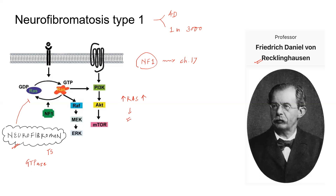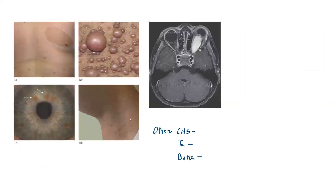Now let us see the clinical features. Neurocutaneous syndromes have CNS or PNS manifestations as well as skin manifestations. In NF1, you are going to get neurofibromas. You will also get café-au-lait spots — coffee-colored macules.